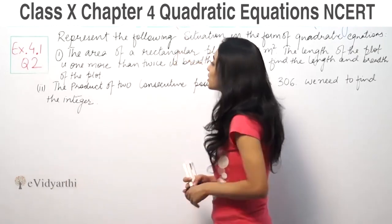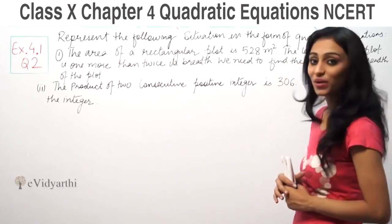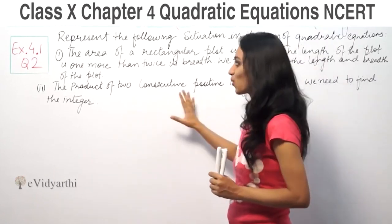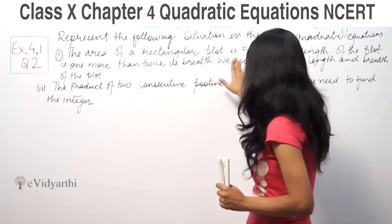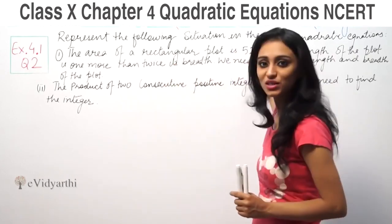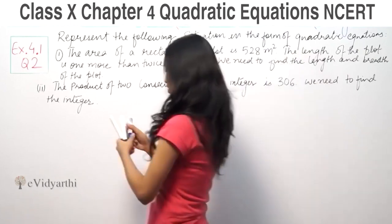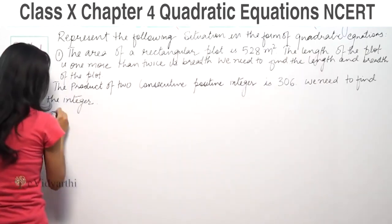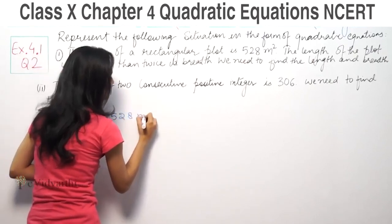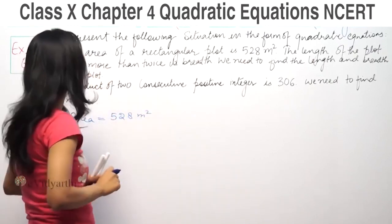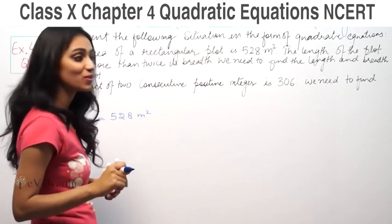The question is, represent the following situation in the form of quadratic equations. The area of a rectangular plot is 528 meter square. Area is given, 528 meter square.